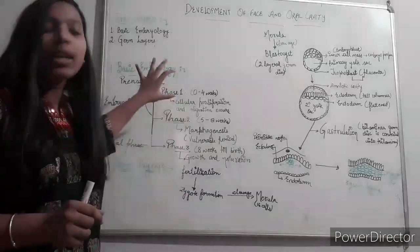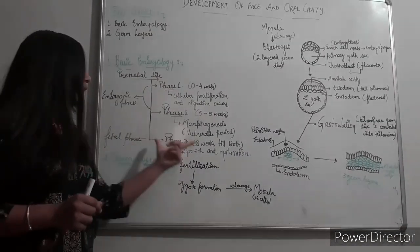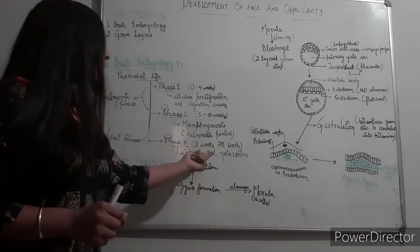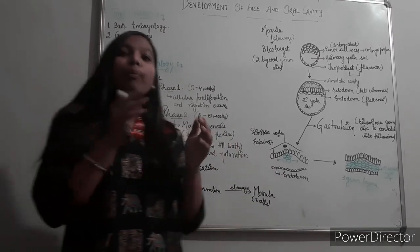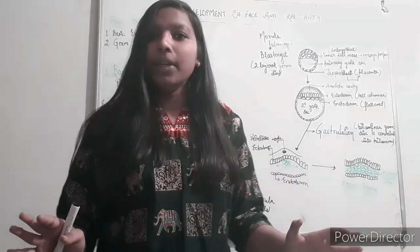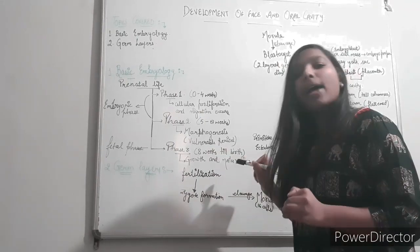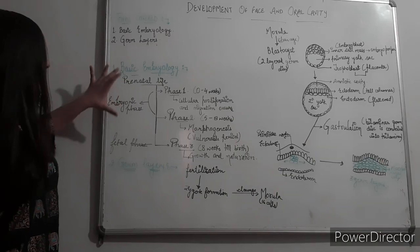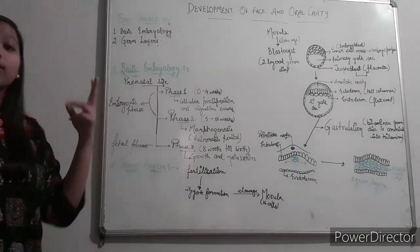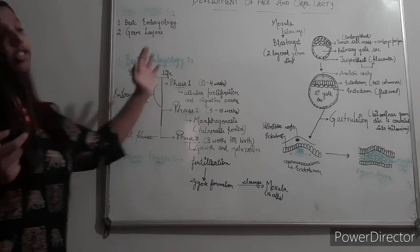Then fetal phase consists of phase three, which is from eight weeks till birth. At that time, morphological characters are fully developed, so further development, growth, and maturation occurs in phase three. So in basic embryology we have studied about prenatal life, which consists of two phases: embryonic phase and fetal phase, and further three phases.